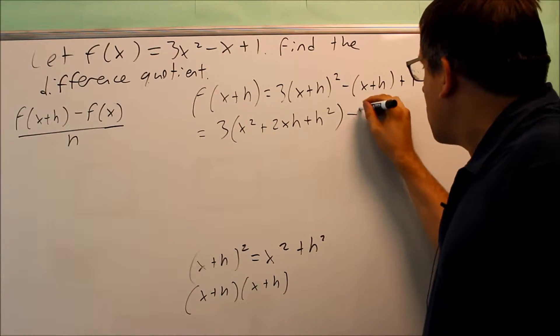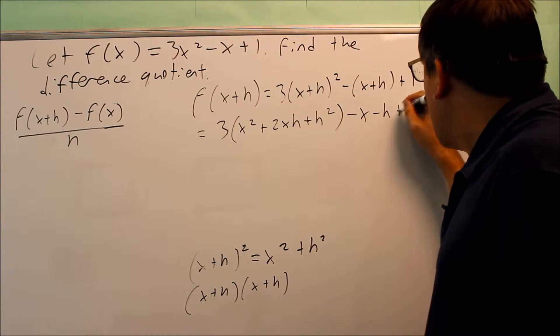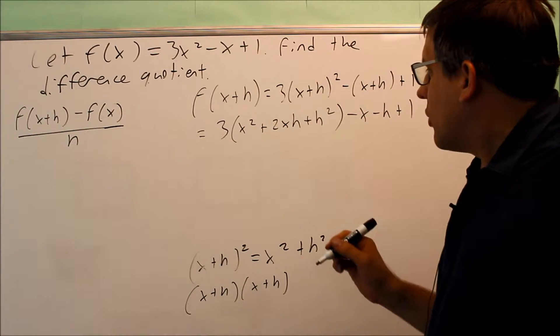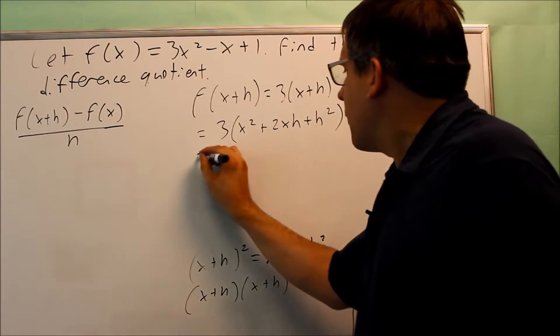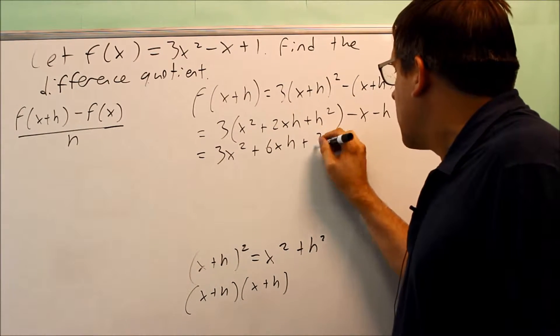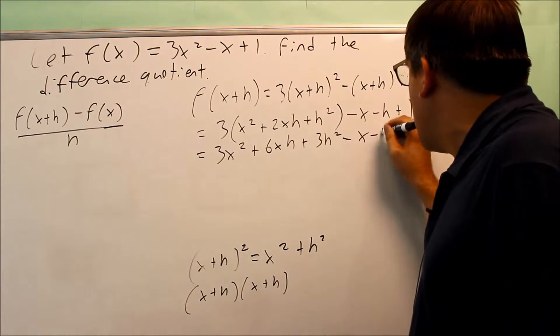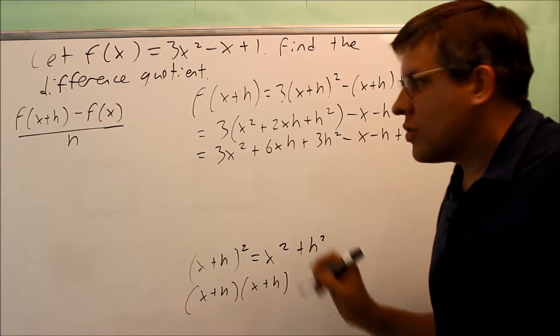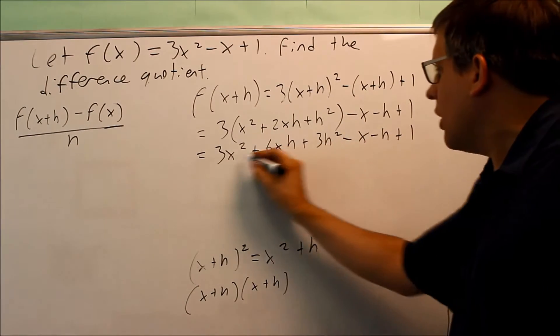For the rest of it, I have a minus times this, so I can just go ahead and distribute that, and then I have a plus 1. And so then I can distribute the 3 through this. I get 3x squared plus 6xh plus 3h squared minus x minus h plus 1. So this whole entire thing right here, that would be f of x plus h.